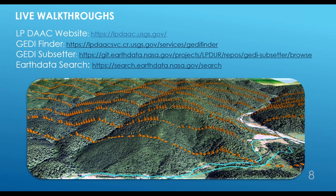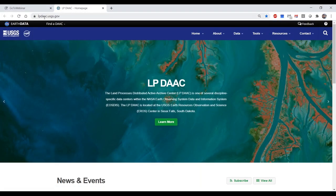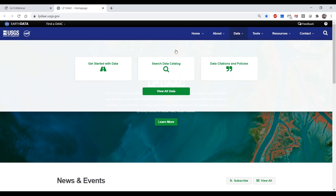Now I'm going to switch gears and go through some live walkthroughs to show you where you can find resources for getting started with GEDI data. You can follow along if you'd like, but I'm going to go through things fairly quickly. Let's get started by visiting the LP DAAC website at lpdaac.usgs.gov. I'm going to direct your attention to the Data tab and then move over to Get Started with Data, then click on Collection Overview.